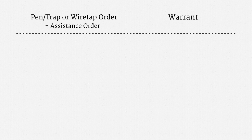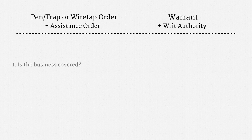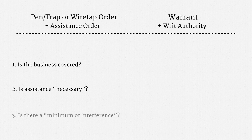We've focused on two kinds of compelled assistance. The first is a pen trap or wiretap order with an ECPA assistance order. The second is a warrant coupled with the All Writs Act's authority. For ECPA assistance, we saw three questions to ask. First, is the business covered? Second, is assistance necessary? And last, would assistance involve a minimum of interference with the communications system?